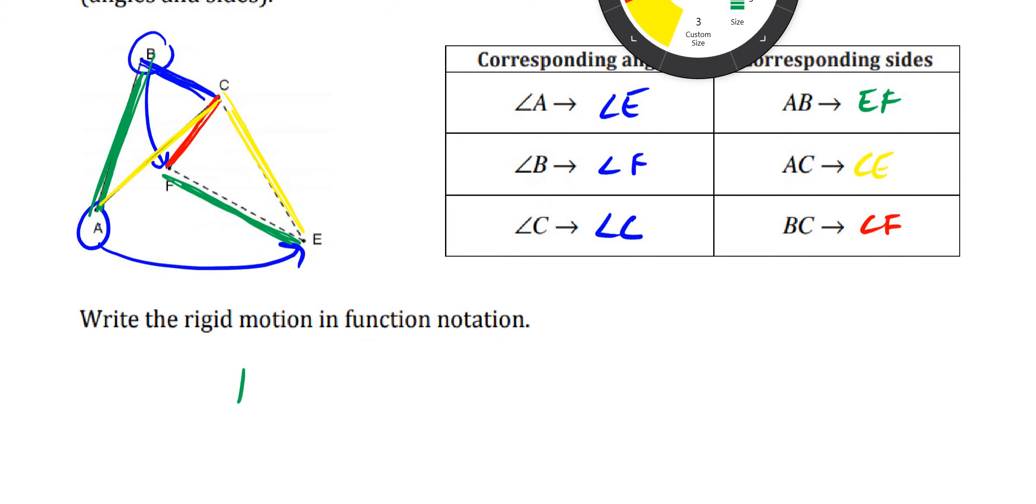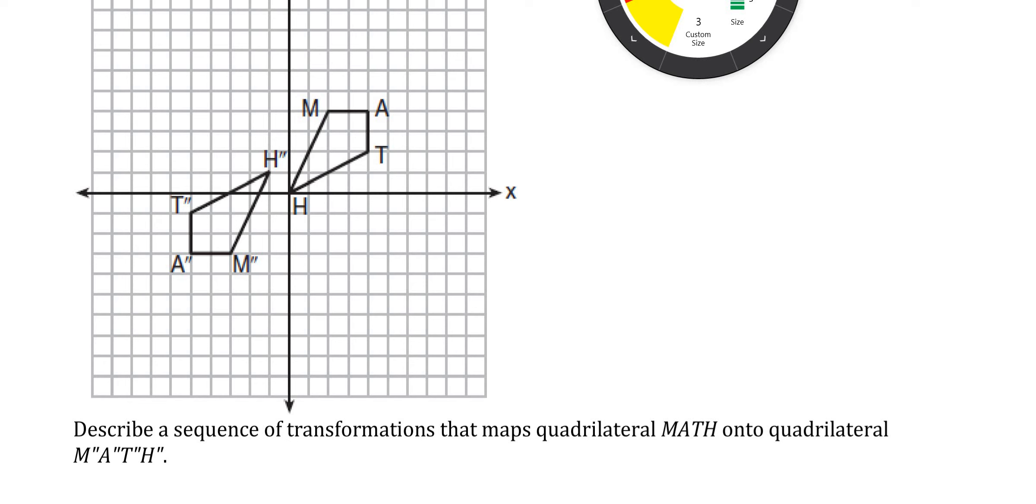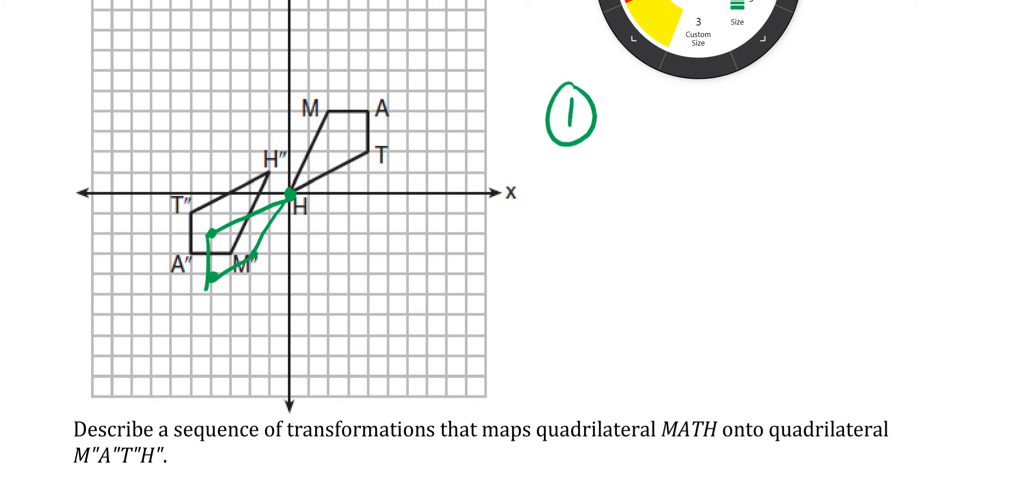Quadrilateral math is graph, and it says describe the sequence of transformations that would map this quadrilateral onto the other. So the first thing I could see is that you could actually rotate this 180. If I rotate this 180, 0, 0 is going to stay. The point 4, 2 is going to become negative 4, negative 2. The point 4, 4 becomes negative 4, negative 4. And the point 2, 4 becomes negative 2, negative 4. So I have this same triangle, or pentagon, or quadrilateral, whatever you want to call it here.